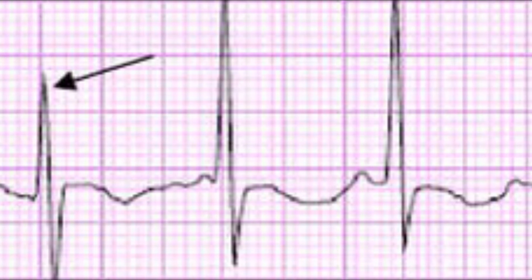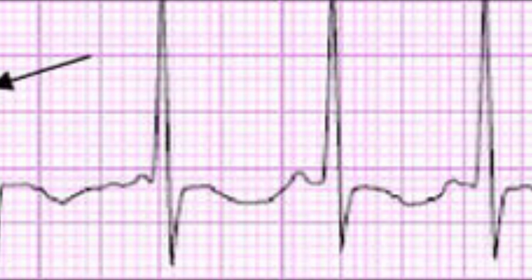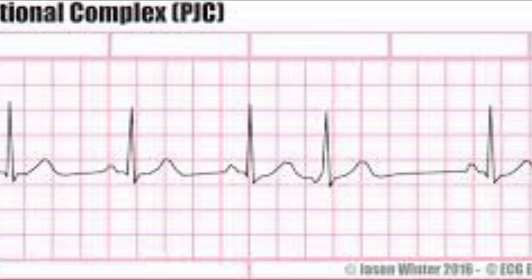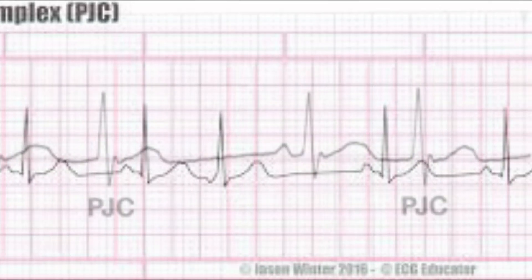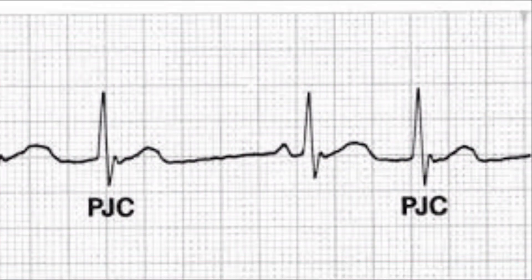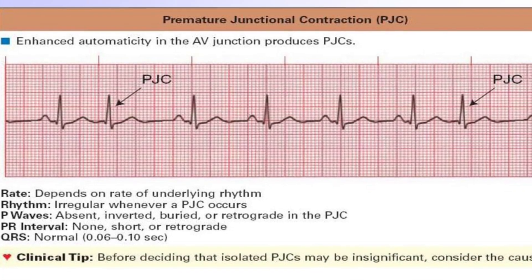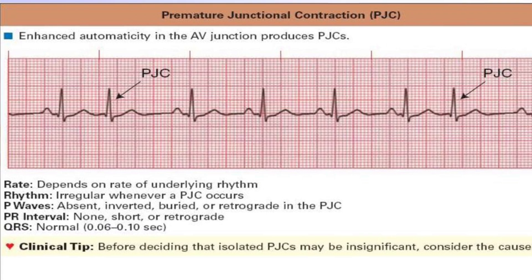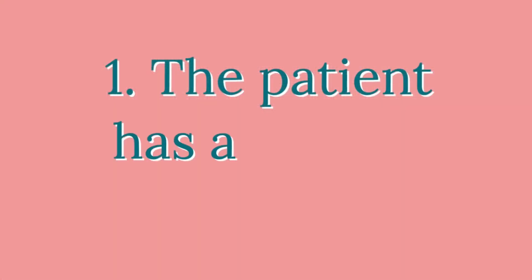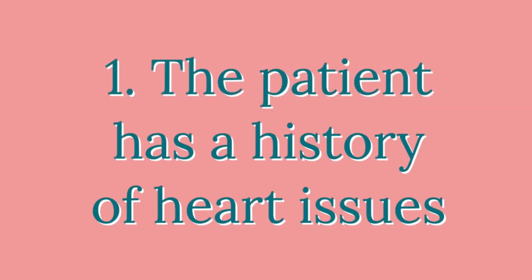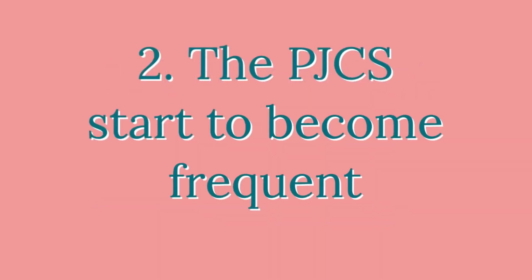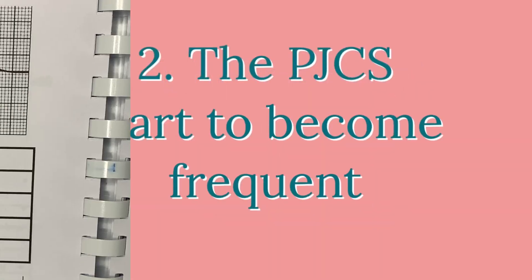Take a look at these examples and then we'll get into how to identify them. When you see a PJC on the monitor, they are really not that alarming unless the patient has a history of heart issues and the PJCs start to become more frequent. That's when you need to tell the nurse.